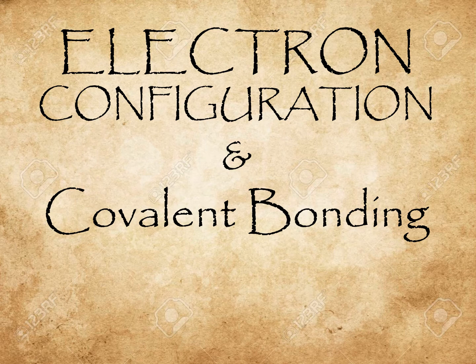The previous video showed you how to communicate the electronic structure or configuration of any element in the periodic table. This video will show you how the electron configuration of atoms in a molecule can be used to explain how a covalent bond forms between them.